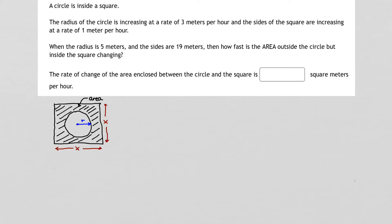Now, where do we begin? The first thing I like to do is write down all of the basic pieces of information, and specifically what I'm looking for — how fast is the area outside the circle but inside the square changing? So what I'm looking for is that shaded area and how fast it's changing. That means I have a rate, and the rate of change of the area over time is what we're looking for.